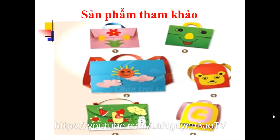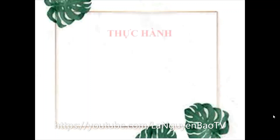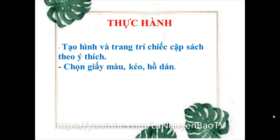Bây giờ chúng mình sẽ cùng nhau chuyển sang Hoạt động 3: Thực hành, để chúng mình thỏa sức sáng tạo các con nhé. Yêu cầu của bài tập như sau: Tạo hình và trang trí chiếc cặp sách theo ý thích. Chọn giấy màu, kéo, hồ sáng cho phù hợp. Sau khi các con làm xong rồi, các con hãy quay một đoạn video ngắn khoảng 2 đến 3 phút chia sẻ về sản phẩm của mình với cô và các bạn về sản phẩm mà các con đã tạo được.